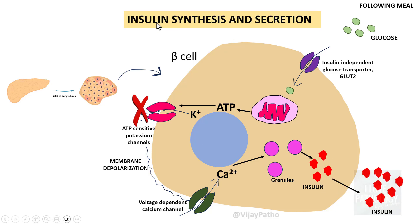This is the mechanism of insulin synthesis and secretion. Key points: the role of the insulin-independent glucose transporter, the role of ATP where the ATP-sensitive potassium channel is inhibited resulting in membrane depolarization, then calcium gains entry into the cytoplasm, which results in synthesis of insulin.